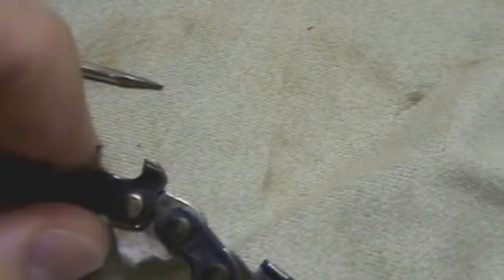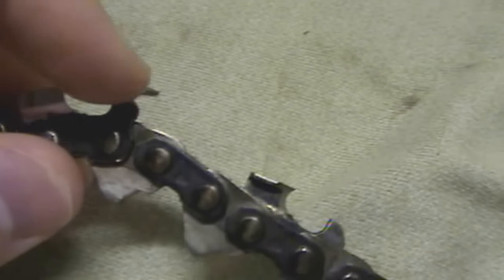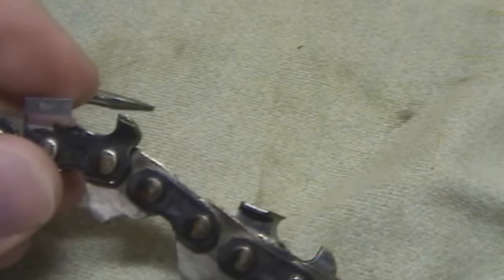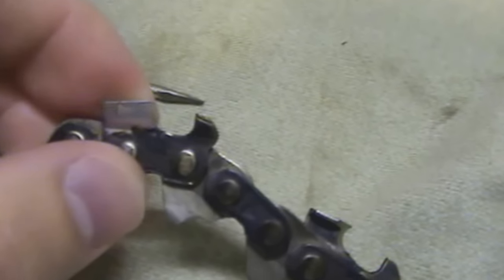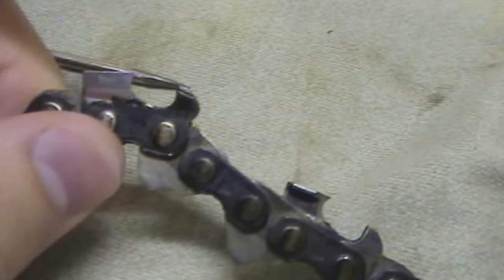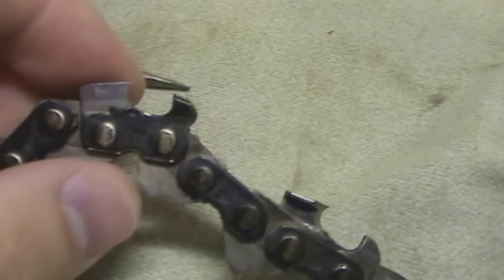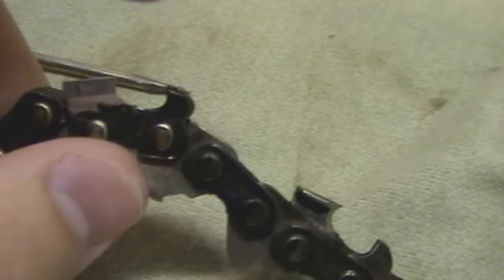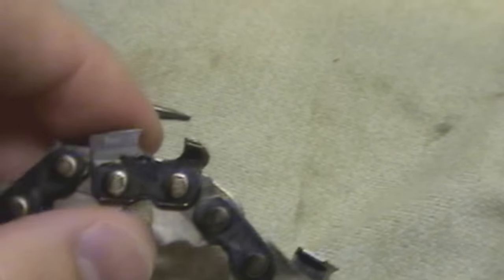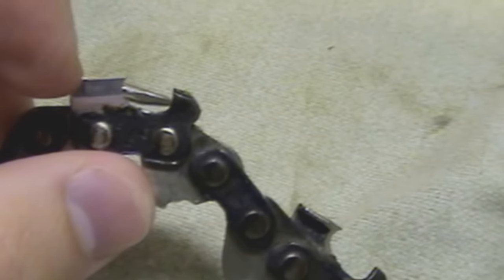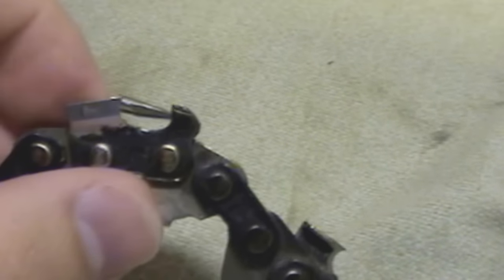Now you have your depth gauge. That needs to be lower than the top of your tooth. I like 25 thou - I like the depth gauge to be lower than the top of the tooth by 25 thousandths of an inch. Now occasionally you have to file that depth gauge down. Why? Because the tooth slopes downward. It has to. It's called relief.